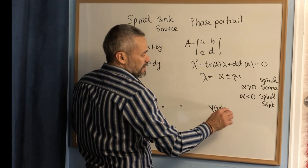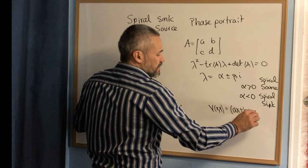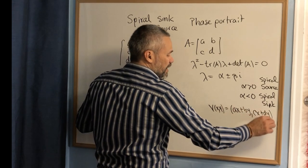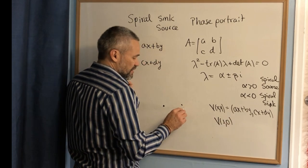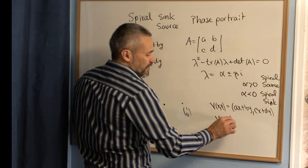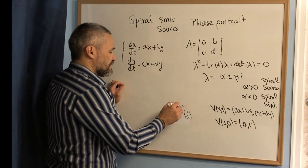which is V of (x,y) equal to (ax plus by, cx plus dy). Then you evaluate this at the point (1,0). Let's suppose that this is the point (1,0). Then you get the vector (a,c), and you draw the vector (a,c).